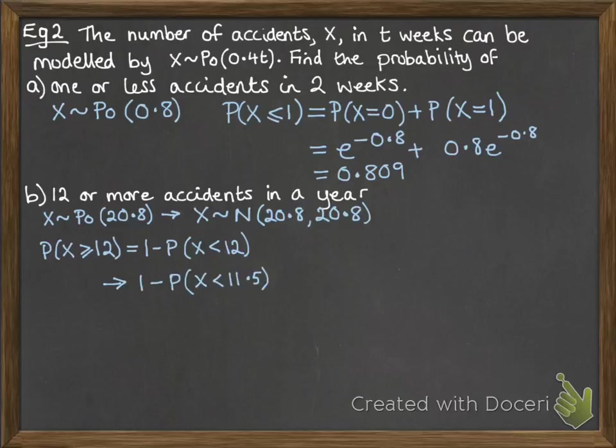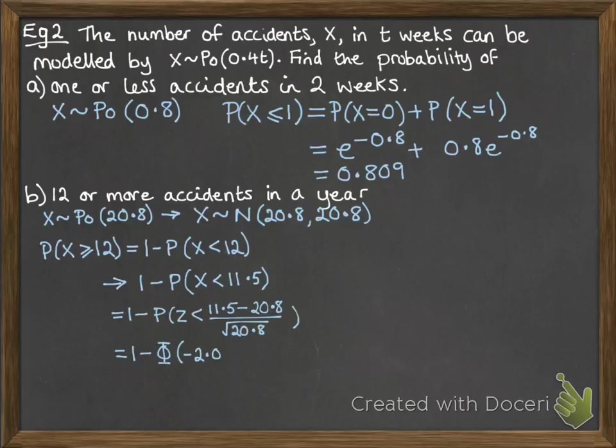Now with the continuity correction, that's 1 minus the probability that x is less than 11.5 because we don't want that 12 included. We want strictly less than. So then using our z values and reading off the table, we get that final result.